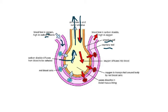In the alveoli, oxygen first dissolves in the film of moisture, then diffuses into the blood and combines with hemoglobin to form oxyhemoglobin. Meanwhile, the carbon dioxide in the deoxygenated blood reaching the lungs diffuses out into the alveolar space and is then exhaled out.